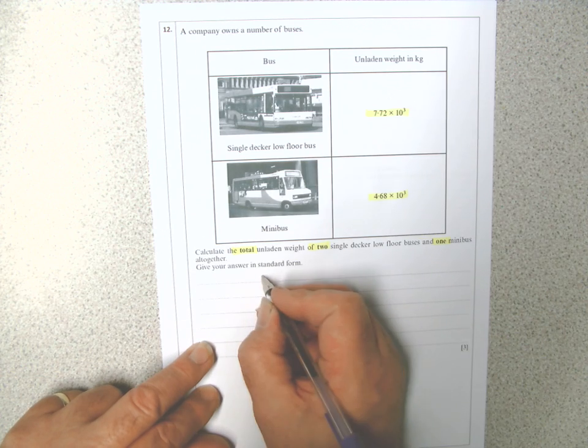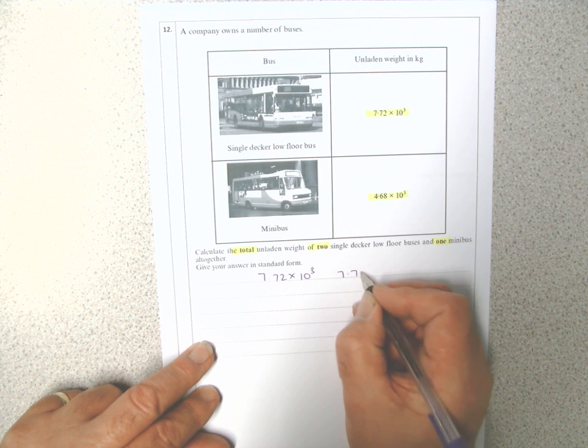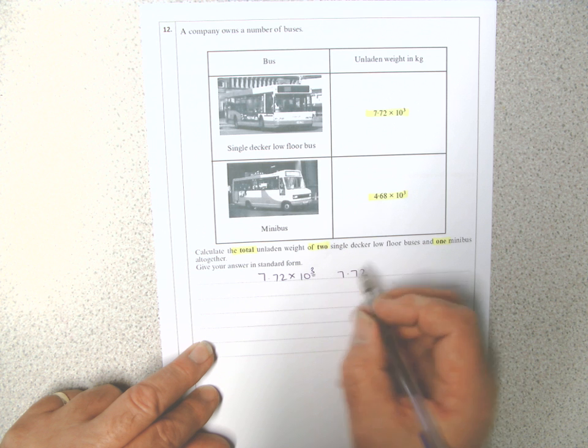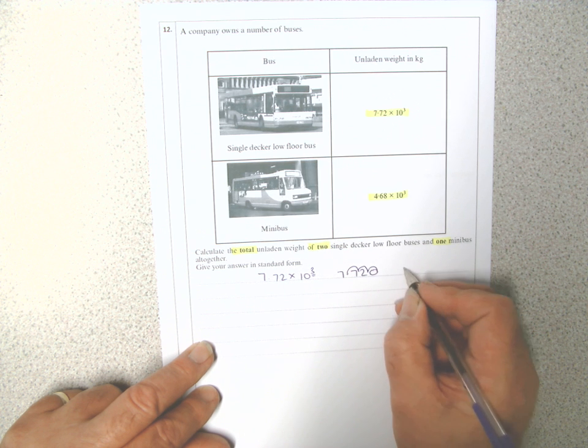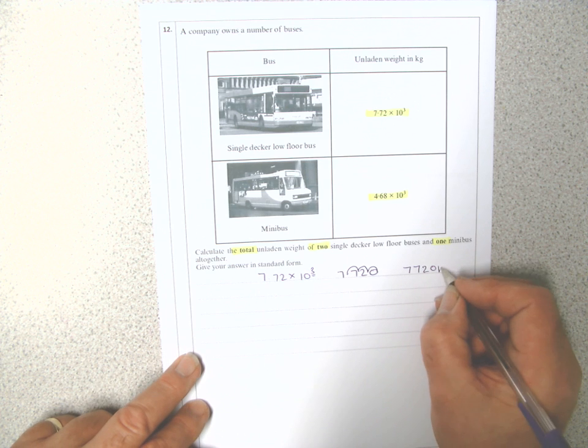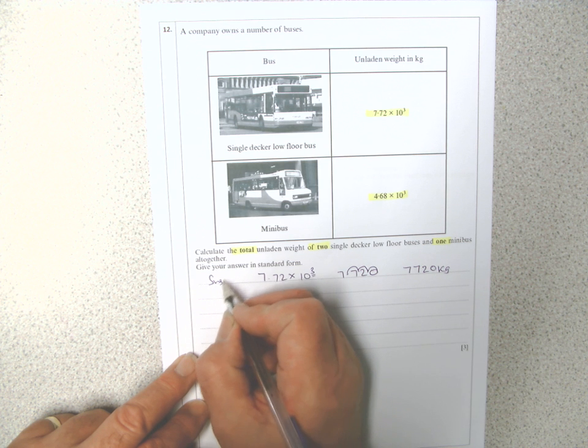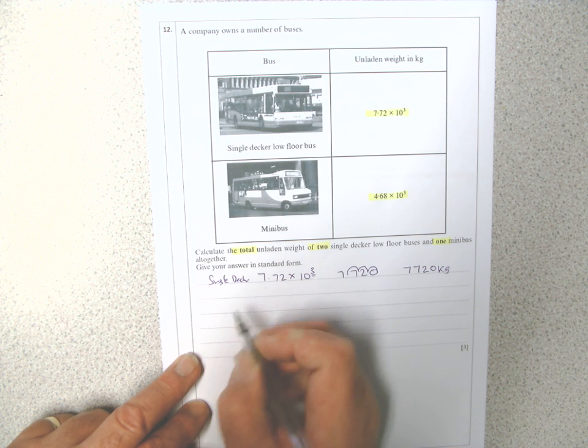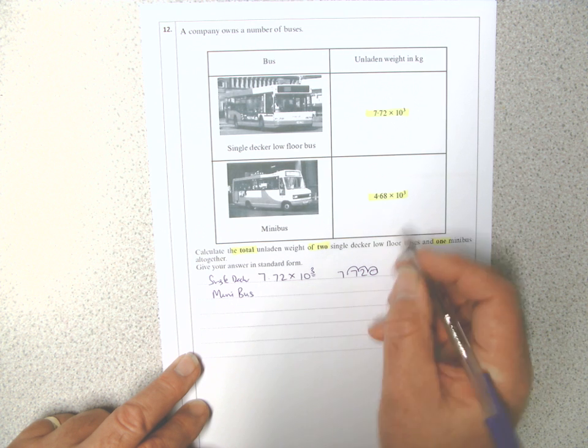So 7.72 times 10 to the 3. That means move the point three places: one, two, three. That's 7720, so that's the weight for the single decker.